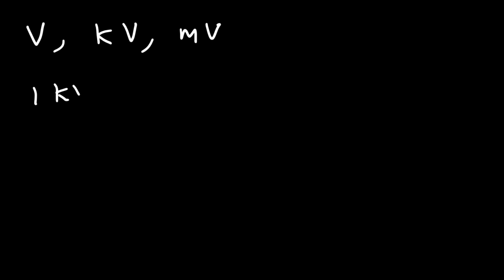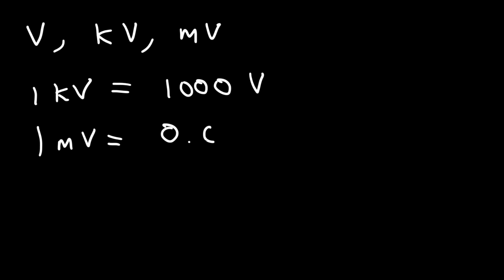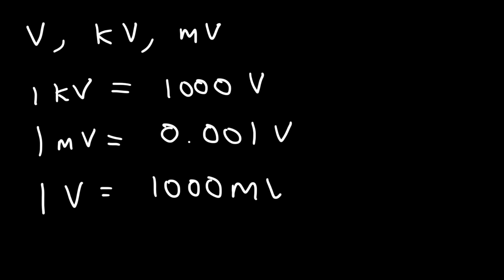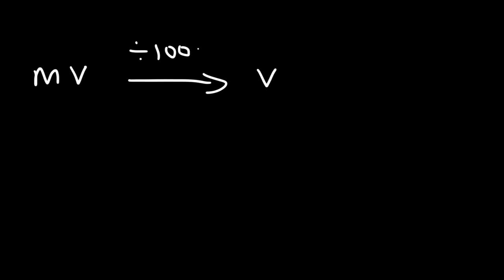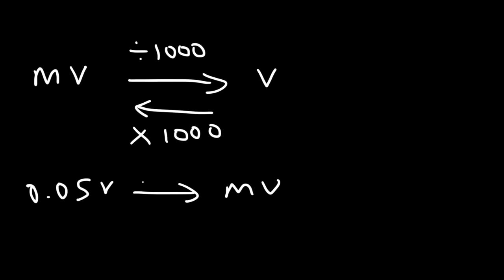Let's talk about the units for voltage. You'll see units like volts, kilovolts, or millivolts. Kilo represents a thousand, so one kilovolt equals 1000 volts. One millivolt is 0.001 of a volt, and one volt equals 1000 millivolts. To convert from millivolts to volts, divide by 1000; from volts to millivolts, multiply by 1000. For example, 0.05 volts times 1000 equals 50 millivolts.